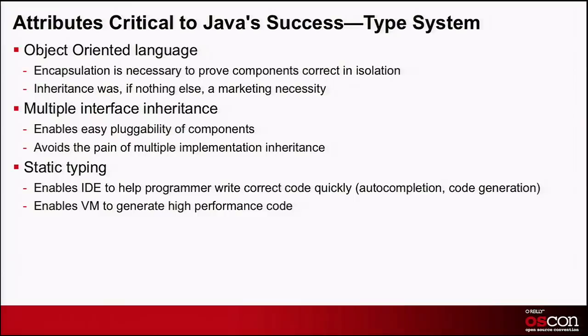Now, let's look at the type system. It's object-oriented, which means two things: it supports encapsulation, and that was absolutely critical because you cannot prove the correctness of components in isolation unless the components can isolate their internals. And then there's inheritance, and that was a marketing necessity. In 1995, if you tried to introduce a new language that wasn't object-oriented, you would have been laughed off the face of the earth.